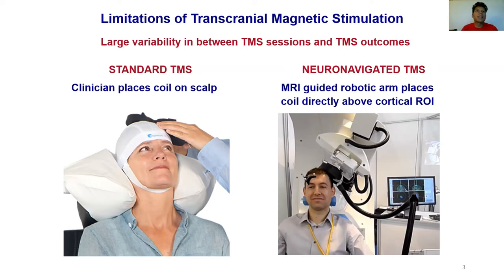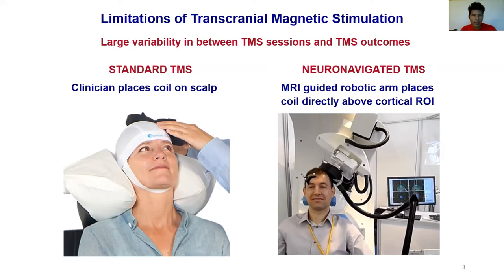Placing the coil above a targeted cortical site isn't generally optimal — the optimum coil position and orientation is really driven by the electric field we want to induce. For example, if we want to maximize the electric field in the targeted cortical region of interest, the optimum coil position could be as high as 14 millimeters away from the scalp-projected position.